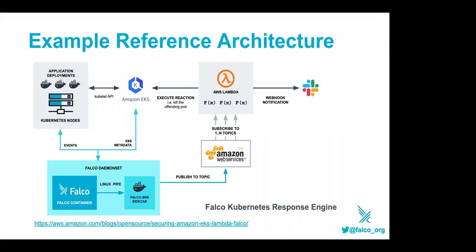Here's an example reference architecture we published ourselves, and we see end users picking it up. We have one built for Google using Google Pub/Sub and Google Functions, and a generic one using CNCF projects — NATS and Kubeless. Falco detects something abnormal, pushes it to a pub/sub service like Amazon SNS, and lambdas fire to enhance the event, kill the offending container or pod, isolate it with network policy, and automate the incident response process.